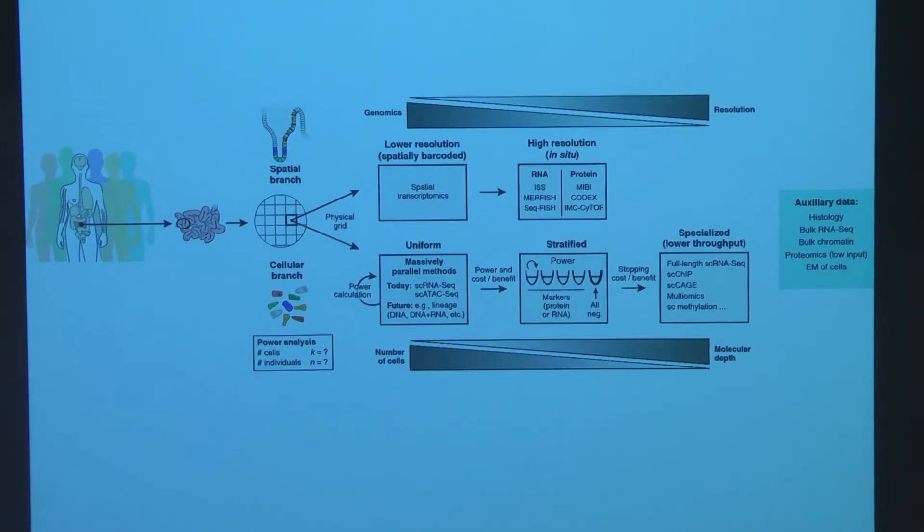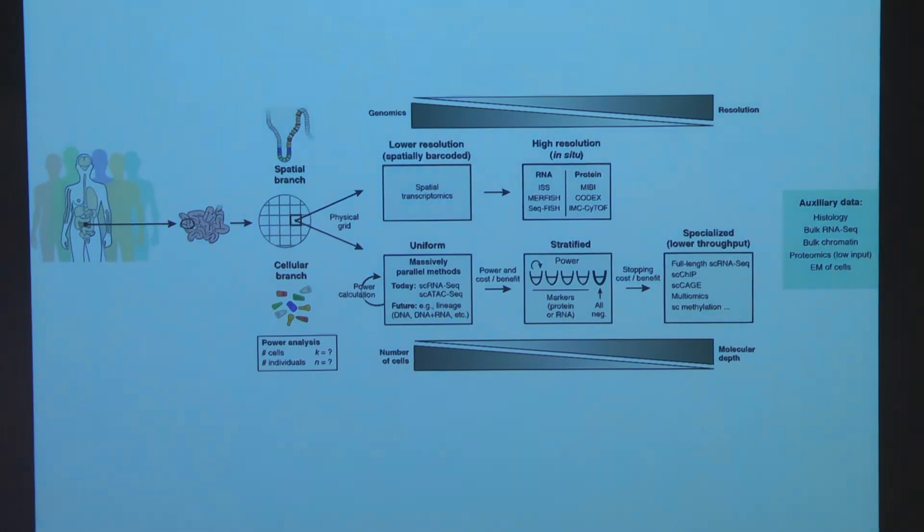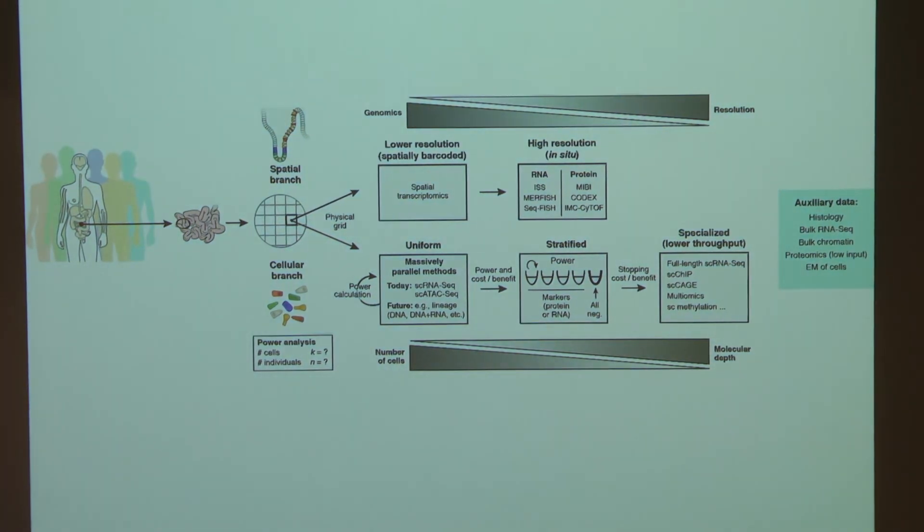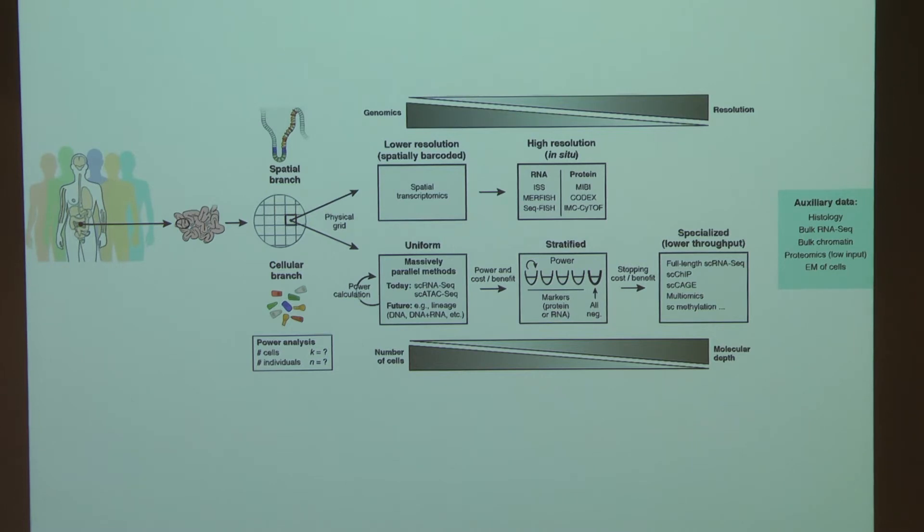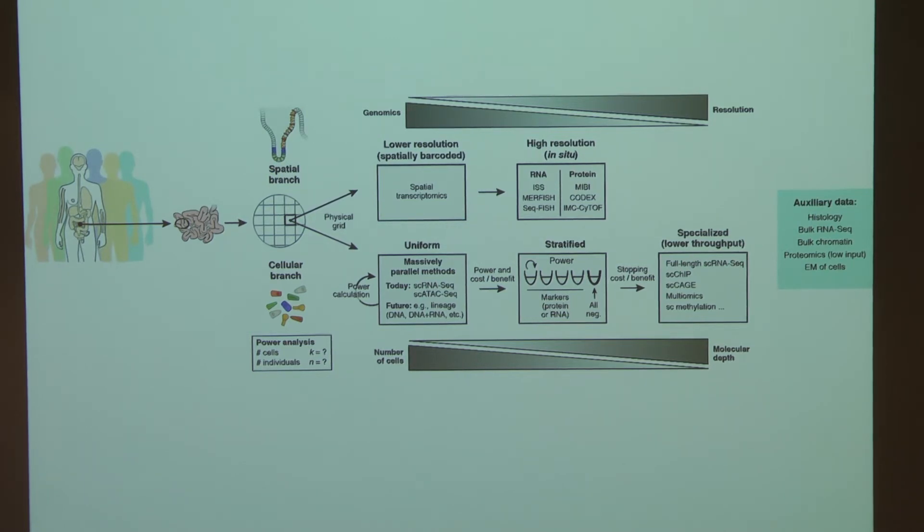And then we have the other branch, which is the spatial aspect, which includes many challenges. Here I mentioned some of the technological challenges and possible technologies to use for this. It's much less mature than single cell RNA-seq. It doesn't scale to the level of the human body, definitely not to the level of the human brain. So much more work is required there on the technology side.